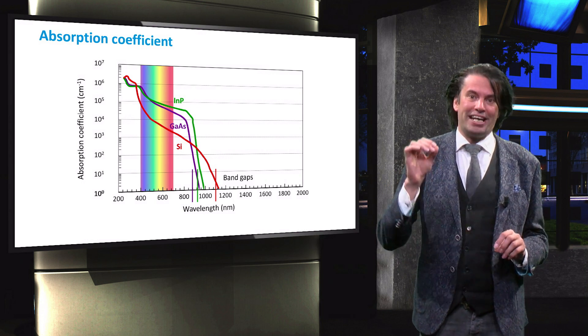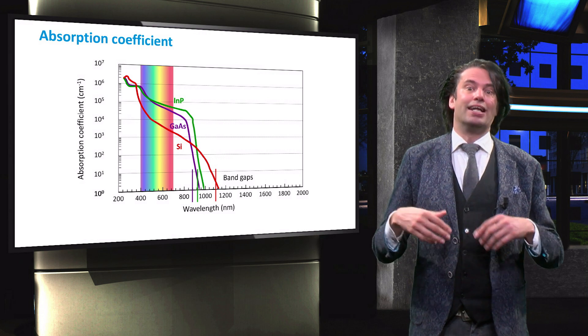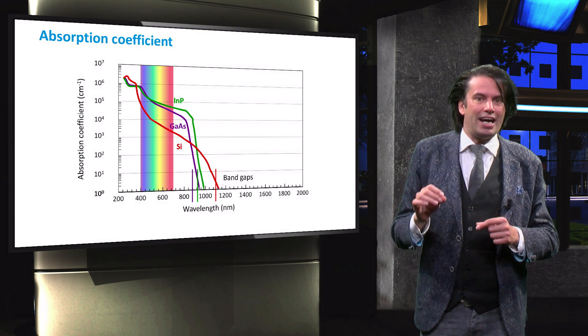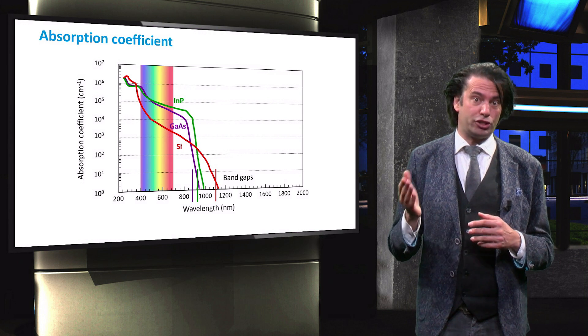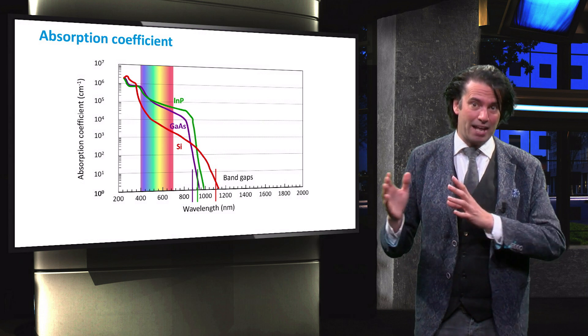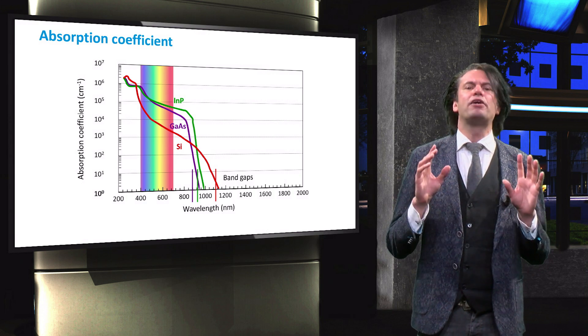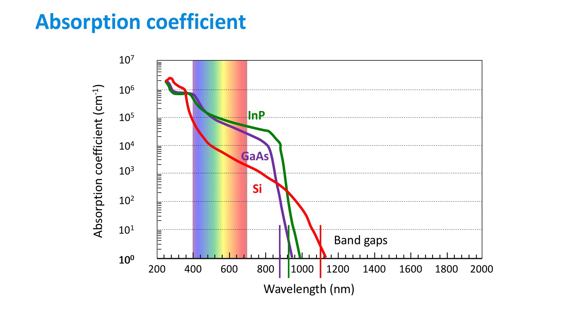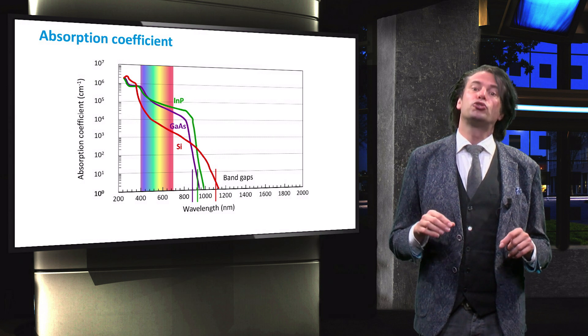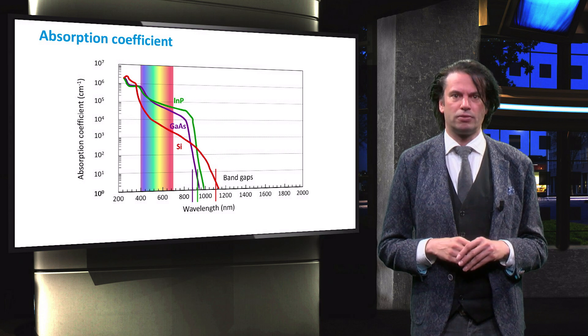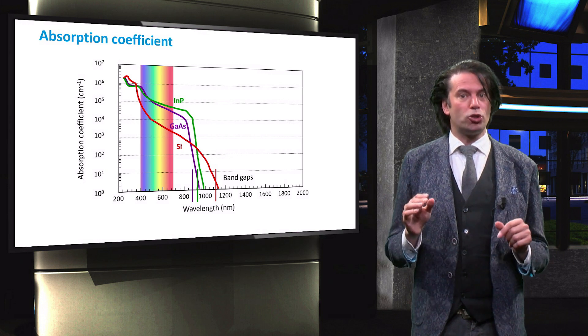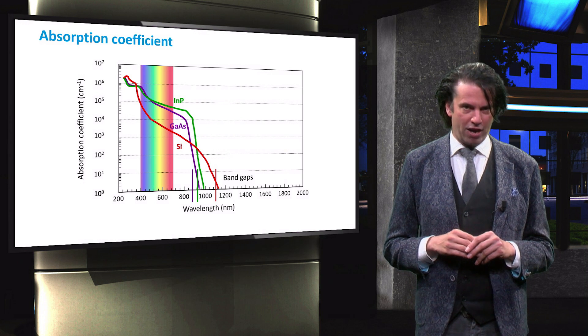This is because for an indirect band gap material, it is less likely that a photon with an energy exceeding the band gap can excite an electron, since it requires a change in both energy and momentum. As you may recall, silicon also has a direct band gap of 3.4 eV, which corresponds to 364 nm. For energy above this direct band gap, silicon absorbs just as much as the III-V materials.